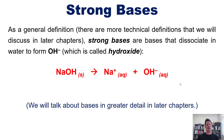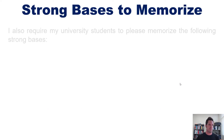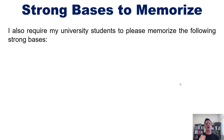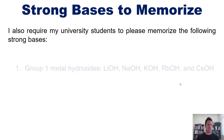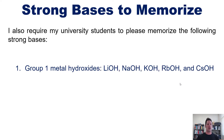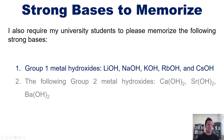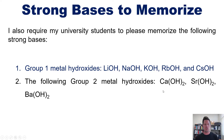We will discuss strong bases in greater detail in later chapters. I require my university students to memorize the following strong bases: Group 1 metal hydroxides — lithium, sodium, potassium, rubidium, and cesium hydroxide — as well as the following specific Group 2 metal hydroxides: calcium, strontium, and barium hydroxide.